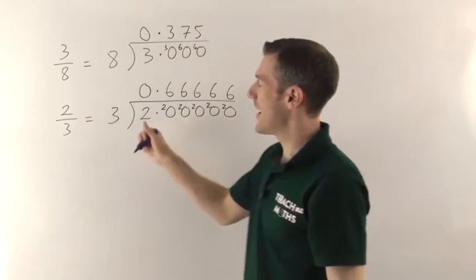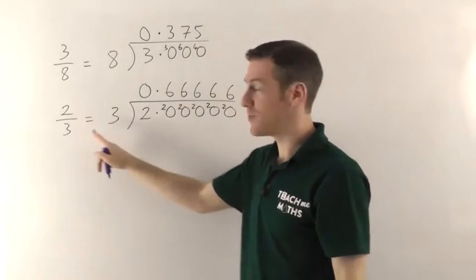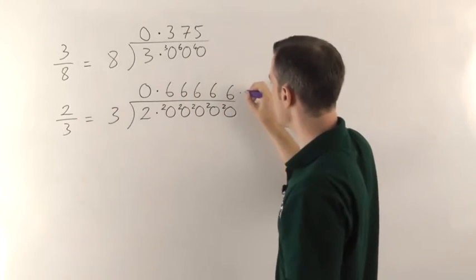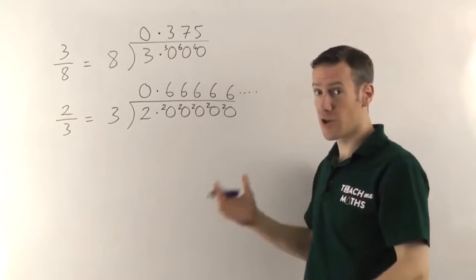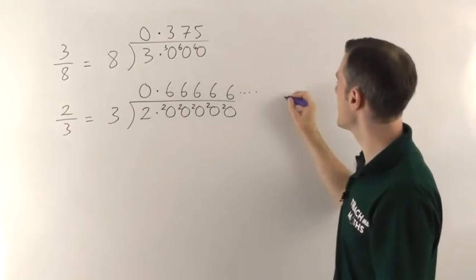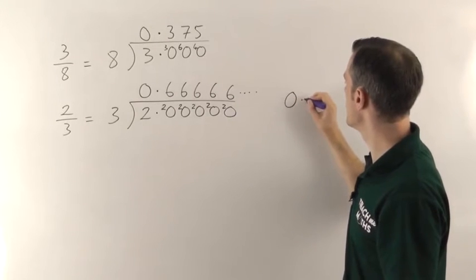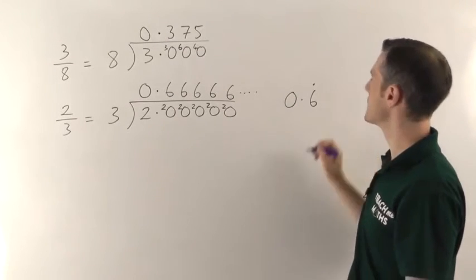So the answer if you like, 2/3 as a decimal is 0.6666666 where the 6s go on forever. In math we say that's a recurring decimal and you can write that as 0.6 with a dot above it like that.